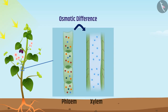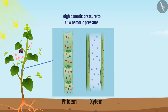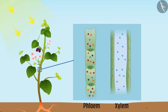The increased concentration of soluble products in the phloem creates an osmotic difference between xylem and phloem, causing water to enter from xylem to phloem. This increases osmotic pressure in the phloem, and water along with soluble products move from high to low osmotic pressure, being transported to different locations such as storage organs, fruits, and buds. Note that phloem carries substances both upward and downward, whereas xylem carries only upward.